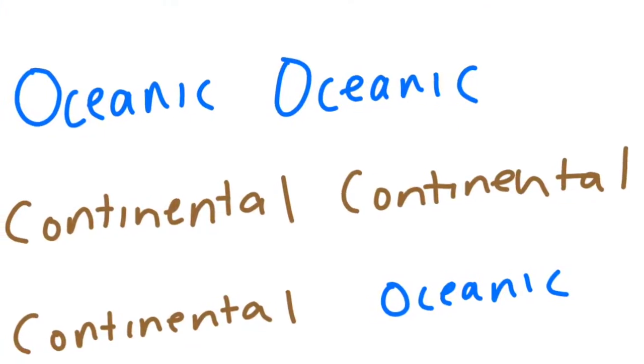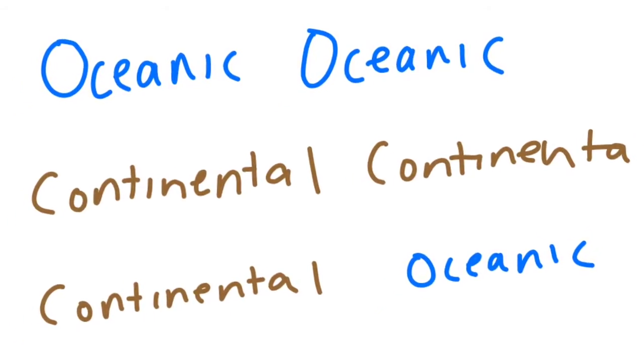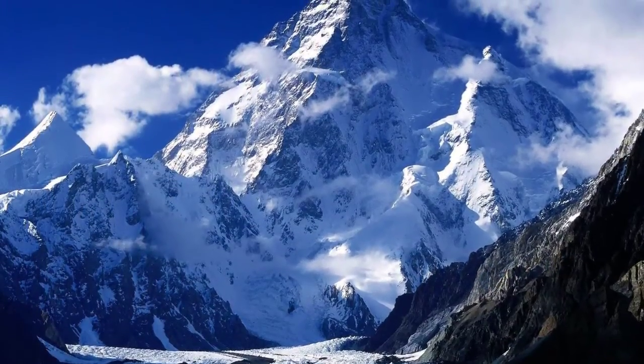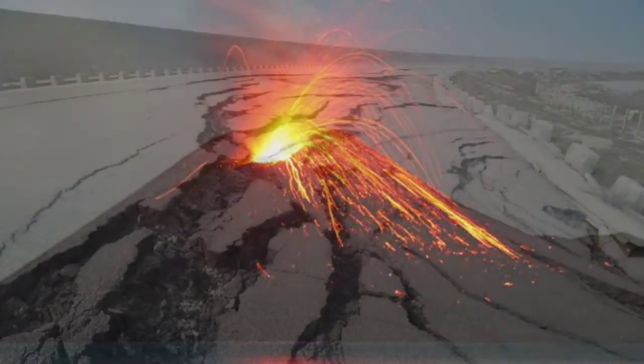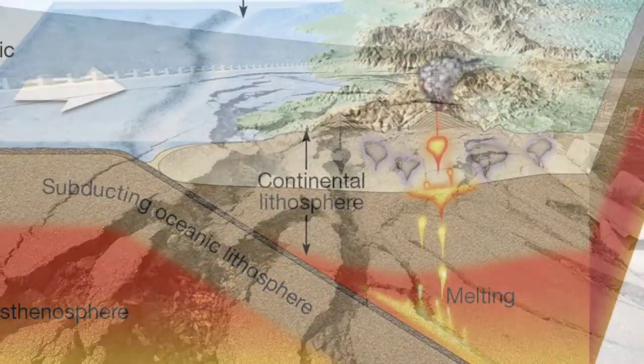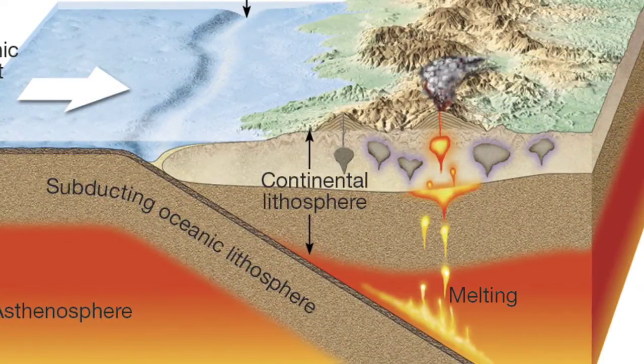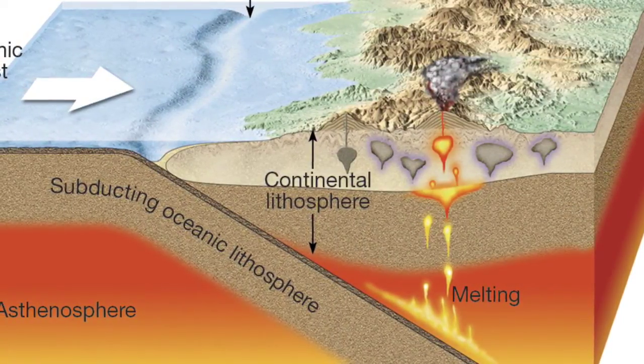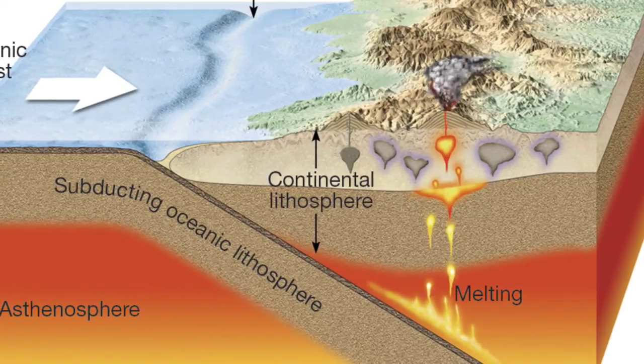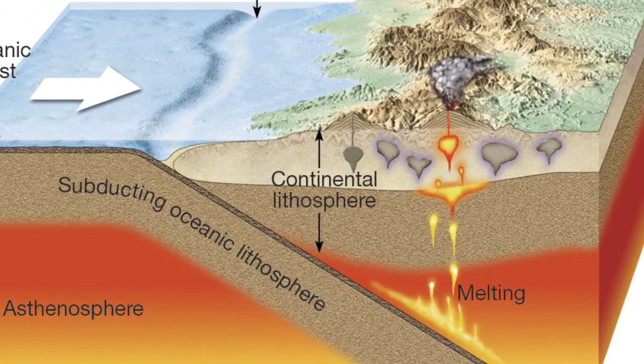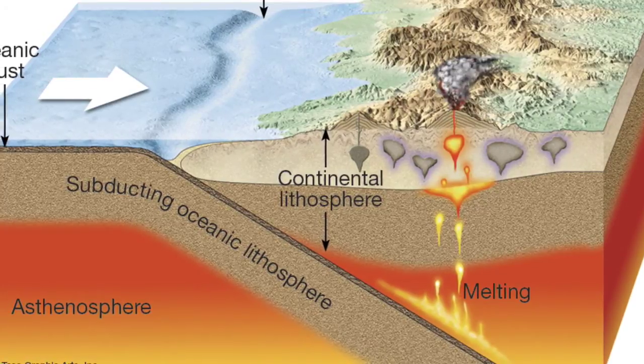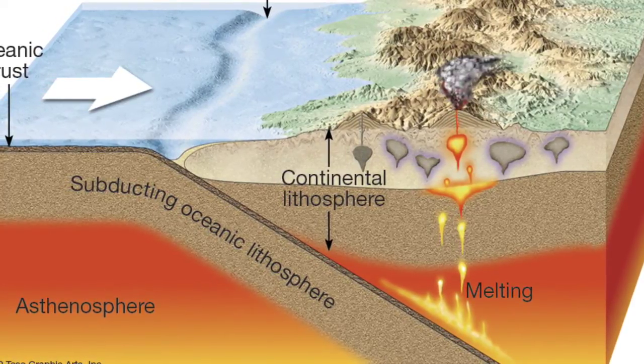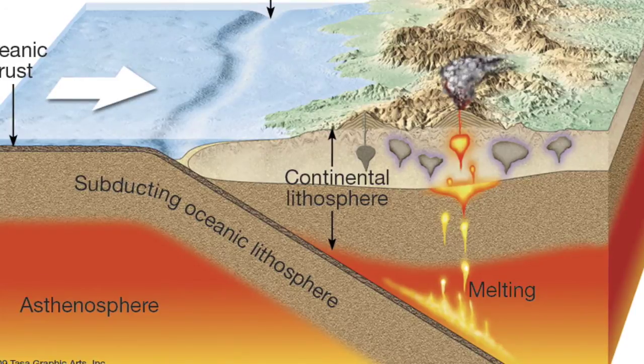Now depending on which one of these reactions you get, a variety of things can be created from mountains to volcanoes to even earthquakes. Taking a look at each one individually, this would be an example of a convergent interaction. We'll look at an oceanic-continental collision, and what happens is these two things converge. Since the ocean floor is more dense and older, it subducts under this continental crust.